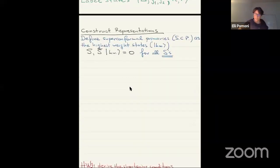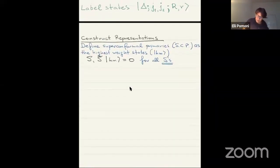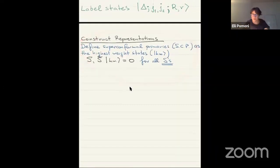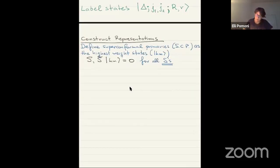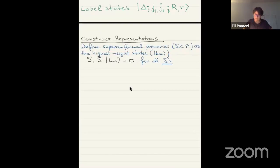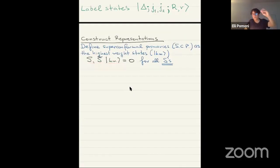As you see, I already cheated a tiny little bit and wrote a few more things while you were on your break. Now I want to construct representations. We begin by defining what the superconformal primaries are — SCP. We define them as the highest weight state of the multiplet, defined by acting with all the Q's and all the S's and getting zero.